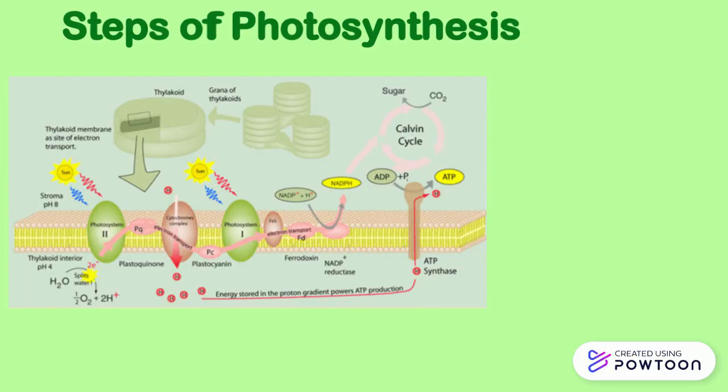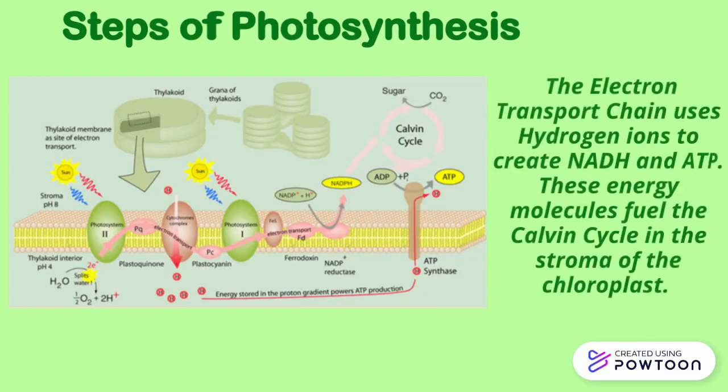During this stage of photosynthesis, the electron transport chain uses the hydrogen ions to create NADPH and ATP. These energy molecules fuel the Calvin cycle in the stroma of the chloroplast.